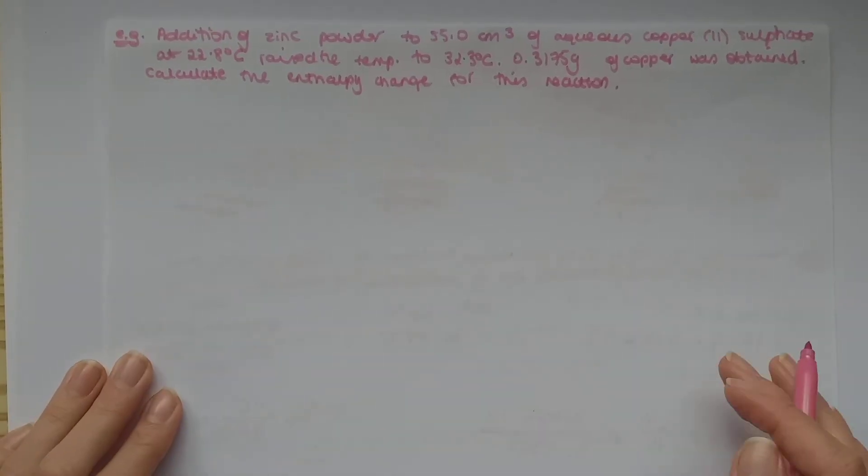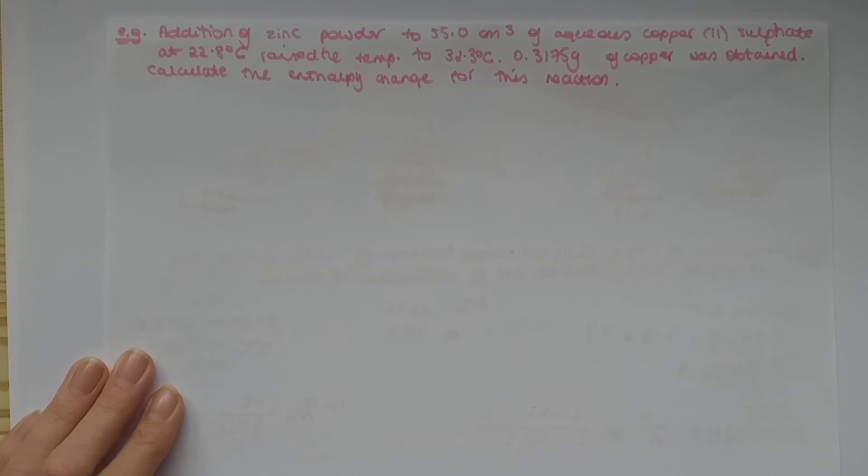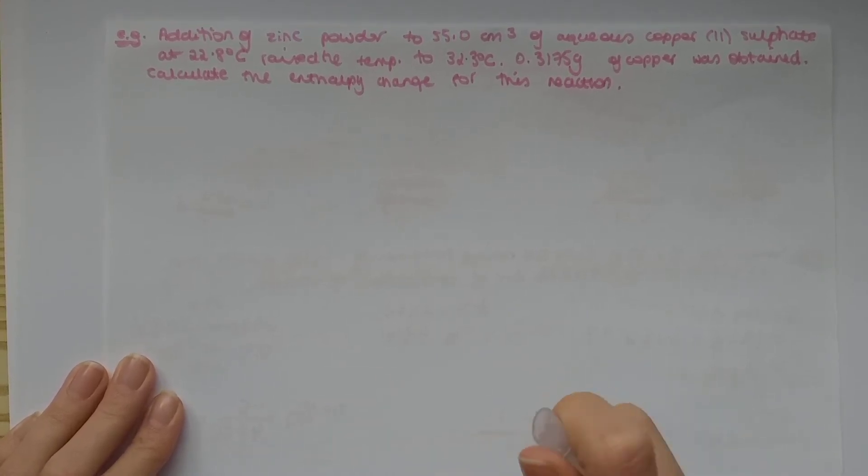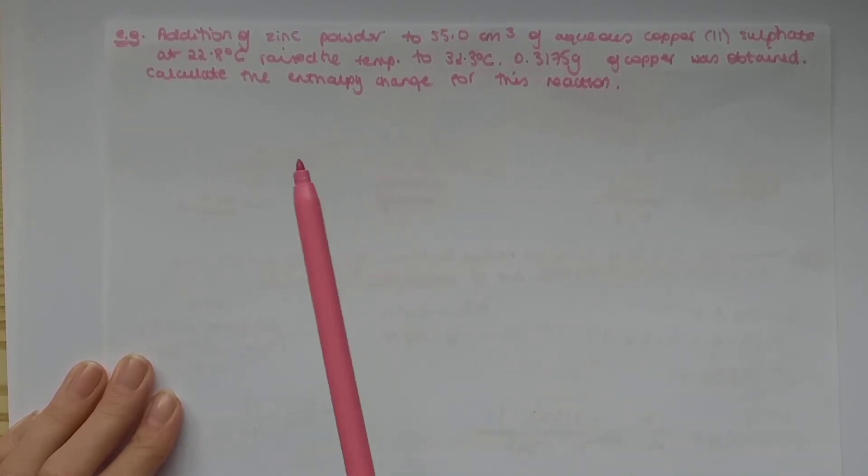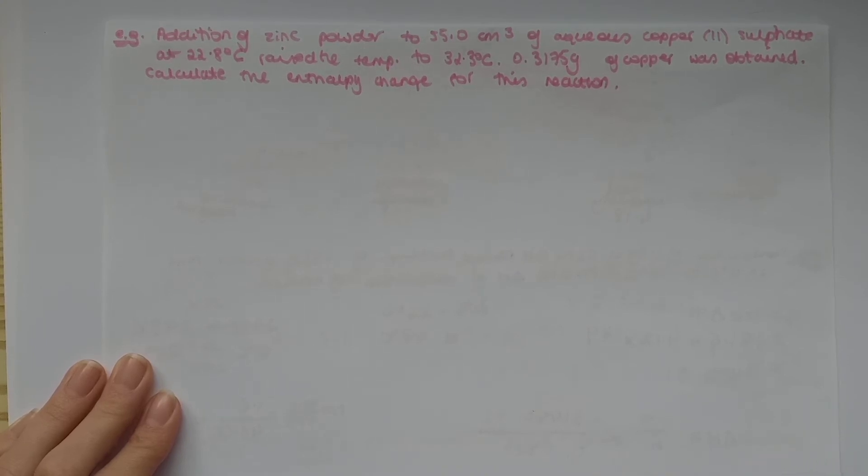So, this is a tricky equation, so I thought I'll do another example. Addition of zinc powder to 55 cm3 of aqueous copper 2 sulfate at 22.8 degrees Celsius raised the temperature to 32.3 degrees Celsius. 0.3175 grams of copper was obtained. And now we are asked to calculate the enthalpy change for this reaction.